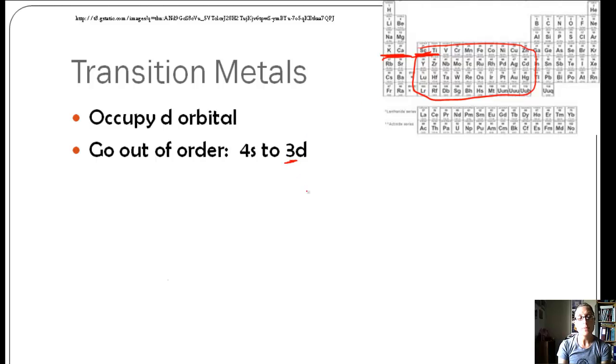You might be saying, well, 3 is a smaller n value. It's got less energy. It should be listed first. But when it comes to 3d, and when it comes to d's, we kind of go out of order a little bit because of the energy. Let's find scandium. Argon is the previous noble gas. Then we're going to start with 4s2 and 3d1.